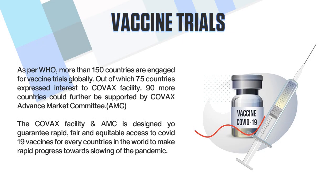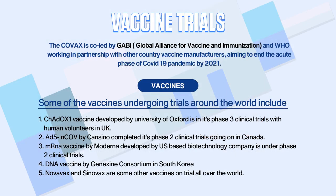The race is on to find a vaccine to stop the spread of COVID-19. As per WHO, more than 150 countries are engaged in vaccine trials globally, out of which 75 countries expressed interest in the COVAX facility. COVAX is co-led by the Global Alliance for Vaccines and Immunization and WHO, working in partnership with other country vaccine manufacturers. Some vaccines undergoing trials include ChAdOx-1 in the UK, AD5 and COVAX in Canada, mRNA vaccine by Moderna, DNA vaccine in South Korea, Novavax and Sinovax.